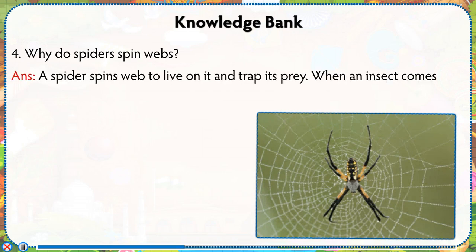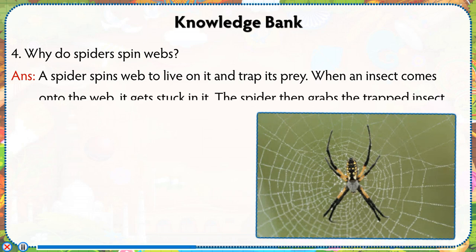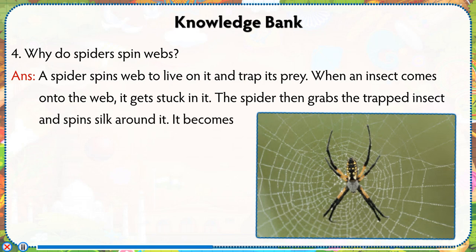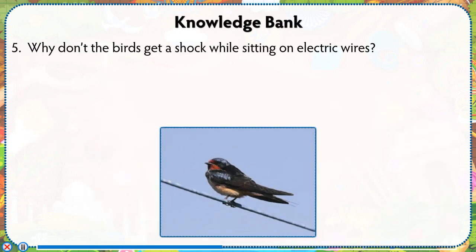Why do spiders spin webs? A spider spins a web to live on it and trap its prey. When an insect comes onto the web, it gets stuck in it. The spider then grabs the trapped insect and spins silk around it. It becomes the spider's food.